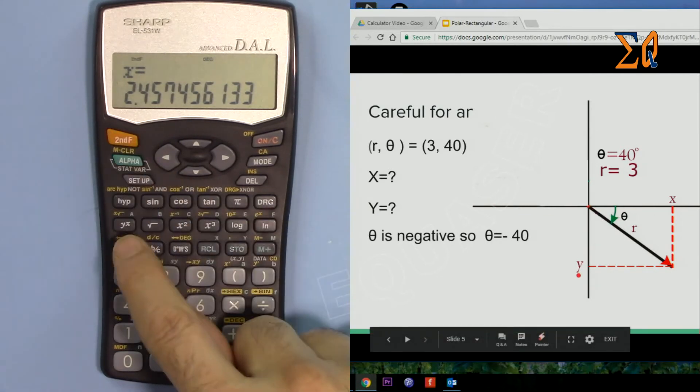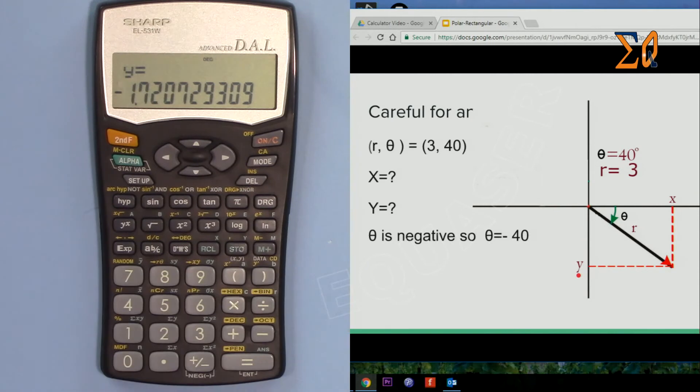This is how you can convert polar and rectangular coordinates one to the other.